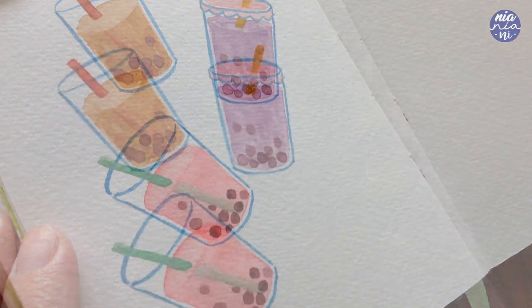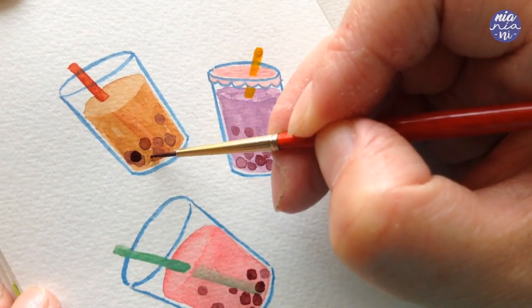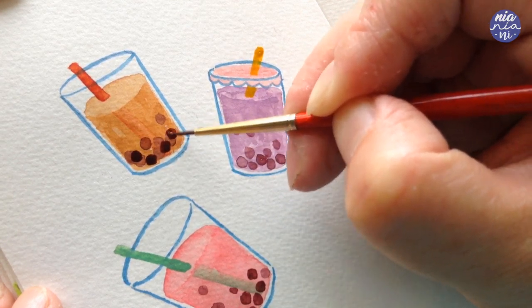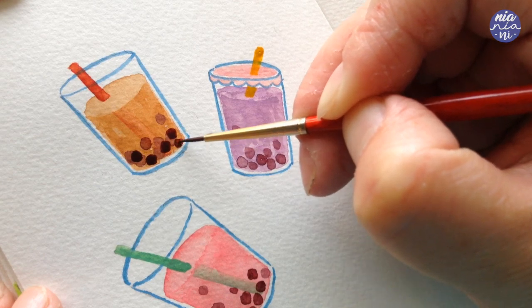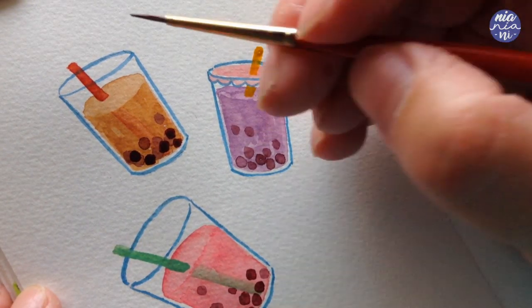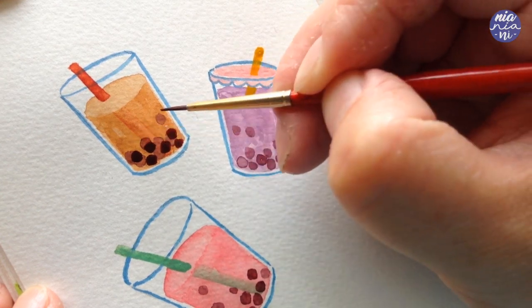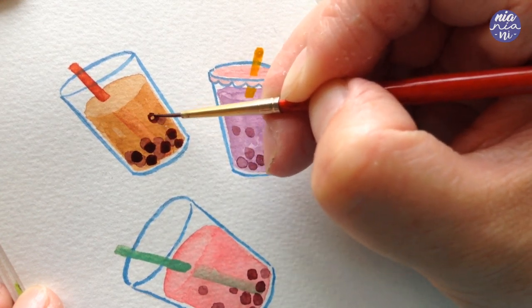I'm going to move back to the first drink now and as you can see, when the bobas dried off it's a bit lighter than what it was initially. So I'm going to add a thicker consistency compared to my first layer and then paint more of the bubbles on top of it.